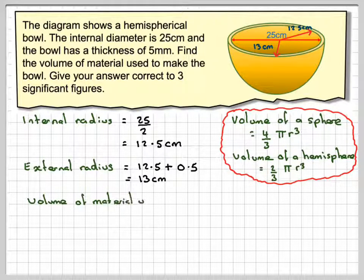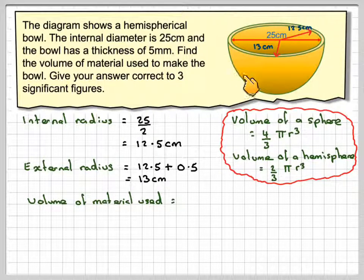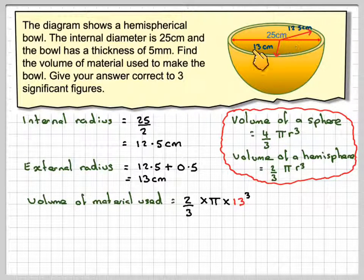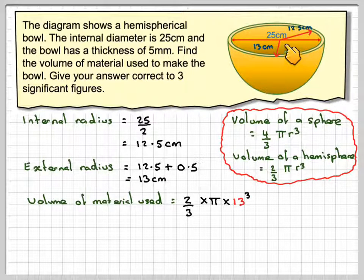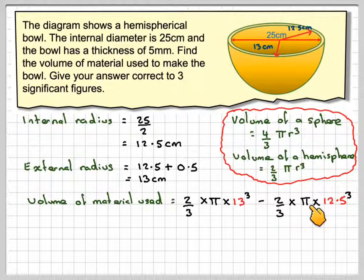Right, the volume of the material used will be the volume of the whole shape with a radius of 13 minus the volume of the inside sphere, which has a radius of 12.5. So it's 2 thirds times pi times 13 cubed minus 2 thirds times pi times 12.5 cubed.